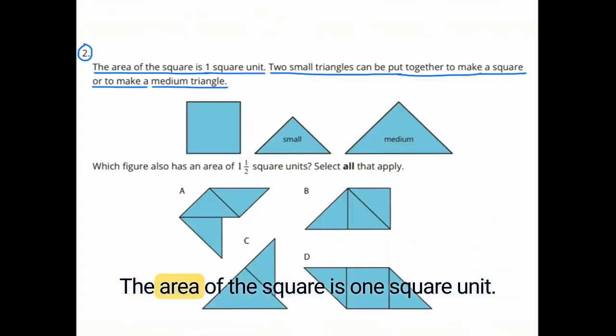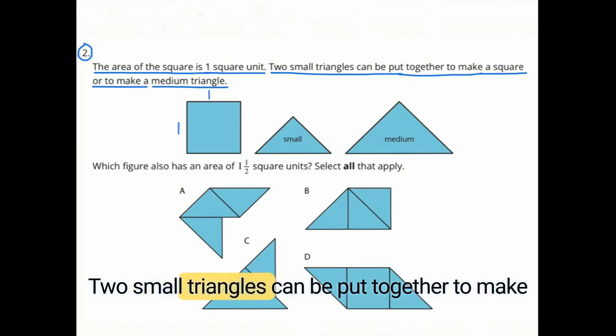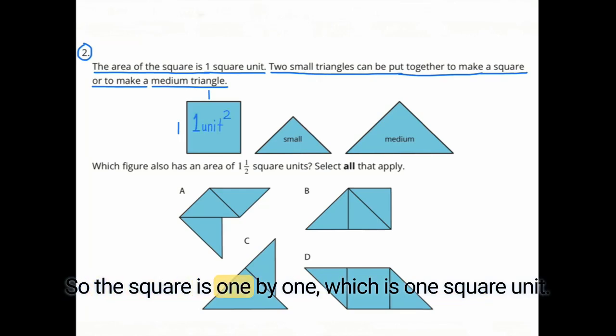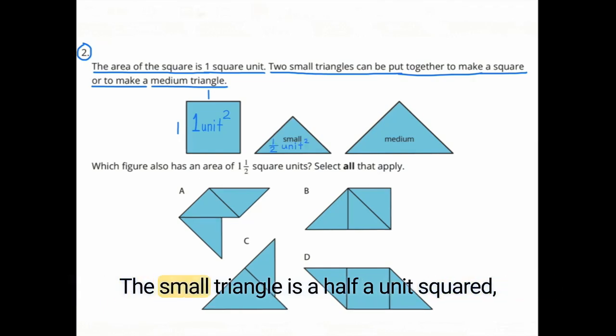Number 2. The area of the square is one square unit. Two small triangles can be put together to make a square or to make a medium triangle. So the square is one by one, which is one square unit. The small triangle is half a unit squared.